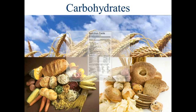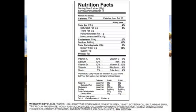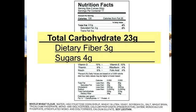I thought I would start this off by coming to a food label, just to reacquaint us with some terminology we're already familiar with relating to carbohydrates. This is from some whole wheat bread, and this is fairly typical of what we would think of as a high-carb or carbohydrate-rich food. I'm going to zoom in on that carbohydrate section of the nutrition facts label.